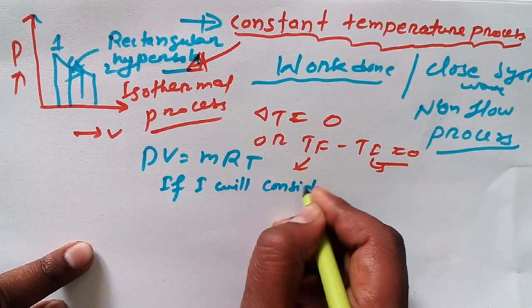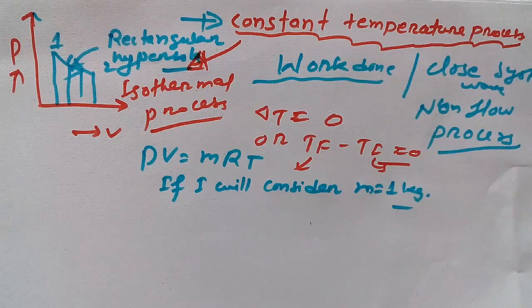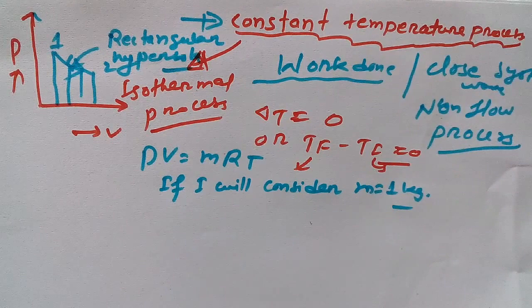Now we know that according to ideal gas equation, PV is equal to MRT. If I will consider M is equal to 1 kg, that means I am considering unit mass for finding out work done for constant temperature process or isothermal process.